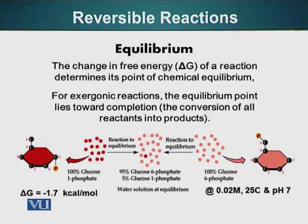If delta G is a positive number, glucose-1-phosphate will not convert into glucose-6-phosphate unless we provide energy to the system. At equilibrium, the number of molecules of glucose-1-phosphate and glucose-6-phosphate is constant — though individual molecules keep interconverting. If one molecule of glucose-1-phosphate converts to glucose-6-phosphate, one molecule of glucose-6-phosphate also converts back. The delta G for this reaction is minus 1.7 kilocalories per mole.